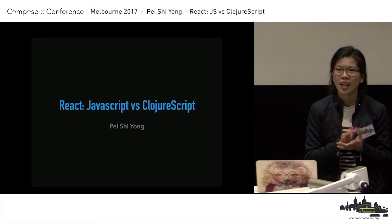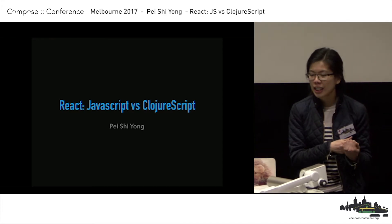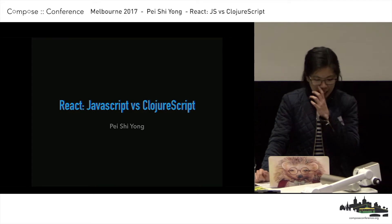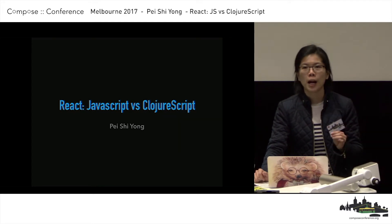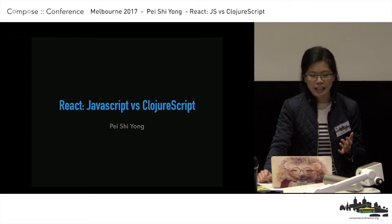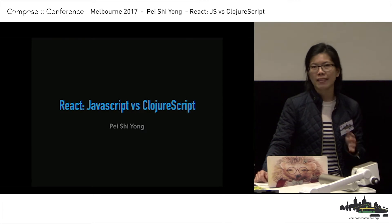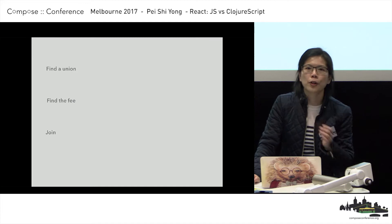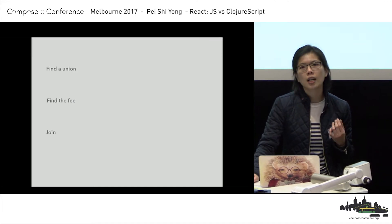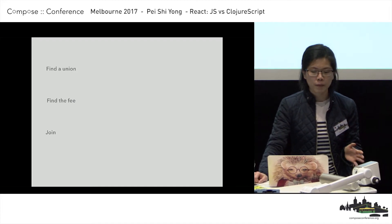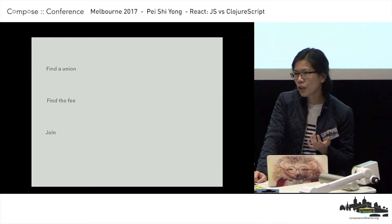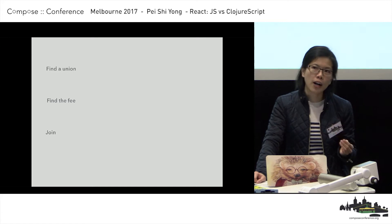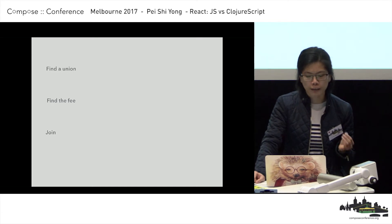Today I'm going to talk about doing React application in JavaScript versus in ClojureScript. ClojureScript is a functional language that compiles into JavaScript. It is very similar to Clojure, but they are two different languages. Earlier this year, I was in a project writing a website to help people join a union. We had a backend in Clojure doing data processing, and the frontend we chose to use React.